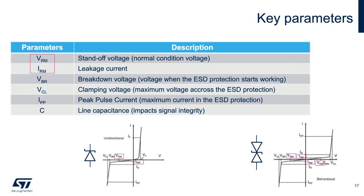ESD protection starts to conduct at breakdown voltage, or VBR. The static voltage is usually measured at 1 mA and can be used to validate that the ESD protection is properly mounted on the printed circuit board. During an ESD event, surge current flows into the ESD protection. The maximum current that can flow is called peak pulse current. The associated voltage is called clamping voltage, VCL. The clamping voltage is the remaining voltage measured after the ESD protection — the lower the clamping voltage, the better the protection efficiency.